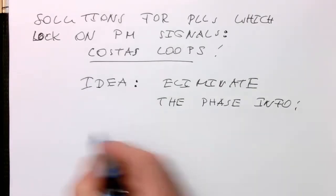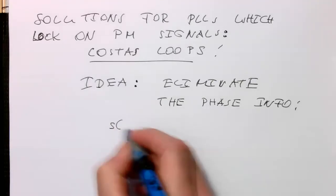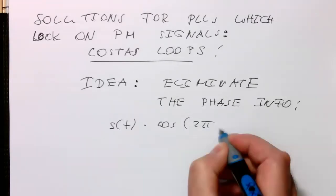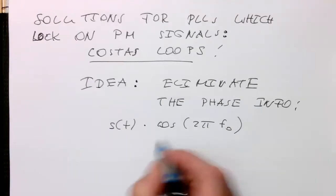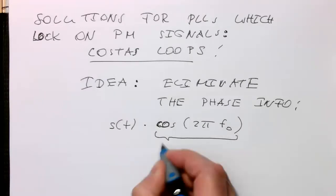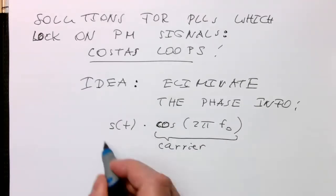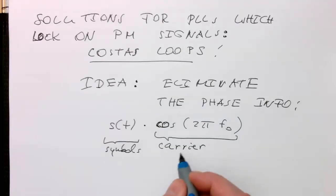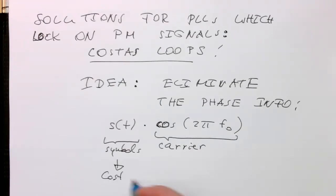So remember, the phase information is transmitted in the way that we have our S of t, and then just multiplied by cosine of 2 pi f0. So that was here our carrier. And these are our symbols here. Remember, we can also have this as a cosine-sine combination for quadrature. But the idea is that basically the Costa's loop, Costa's loops ignore this term or eliminate them.